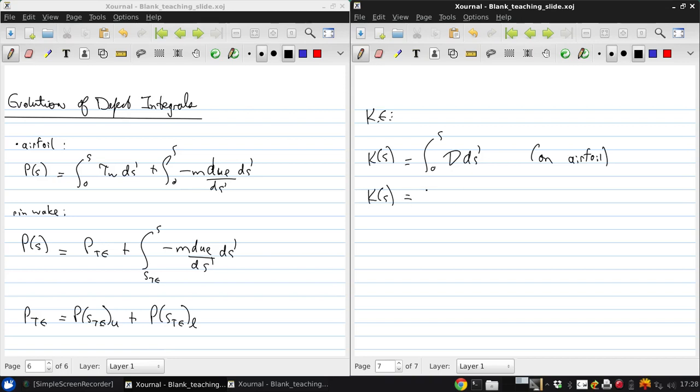And in the wake, k starts as the k at the trailing edge, plus again the integral from s t e to s of the dissipation integral. And this is for the wake.